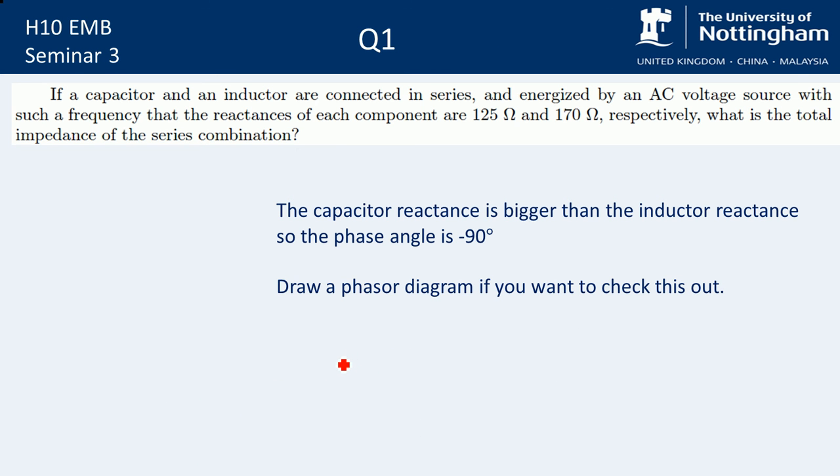So let's go through seminar question one. So we've got a capacitor and inductor connected in series. They're energized by an AC voltage source with a frequency that reactances of each component are 125 ohms and 170 ohms respectively. So what is the total impedance of this series combination? Well, there's a couple of different ways to look at it. You can draw a diagram, you can draw an inductance diagram, or you can just jump in with the equation straight away. Because we've got capacitor first, so that's XC. And then we've got inductor, so that's XL. So remember it says respectively, which means that's the way. So it says capacitor first, so this is XC and inductor second, so that's XL.